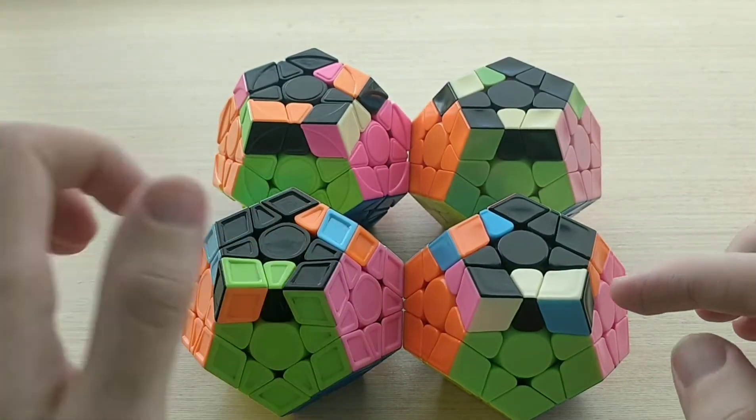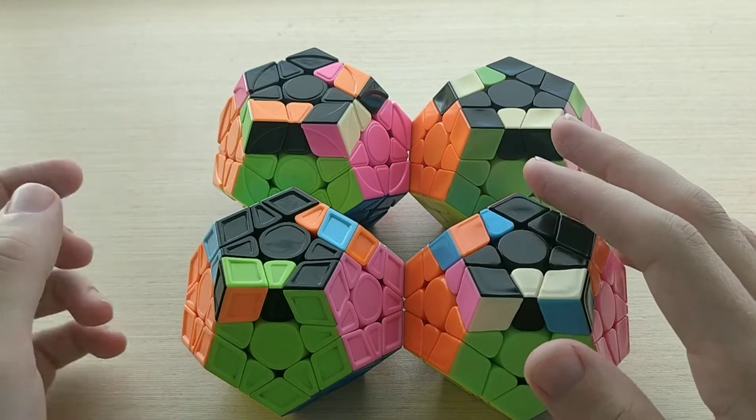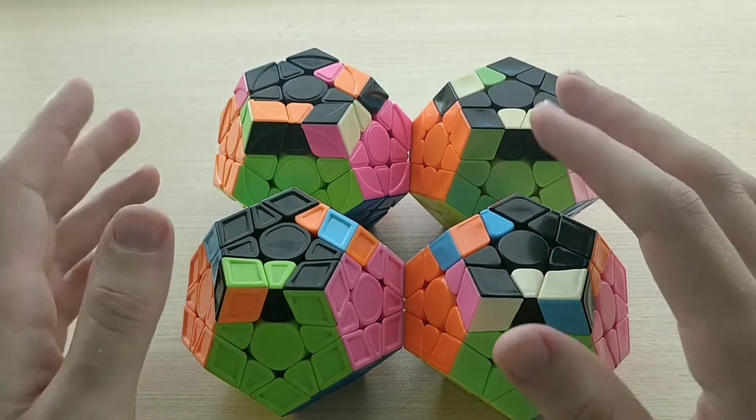So for these first two 9a plus and 9a minus, the algs that we're going to use are some of the standard algs that we'd use for that case and its mirror on 3x3, whereas these ones at the back are new but super short algorithms.